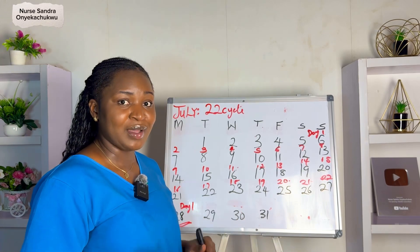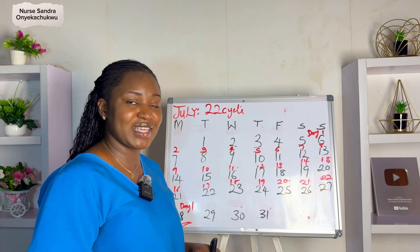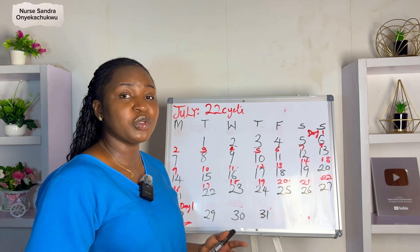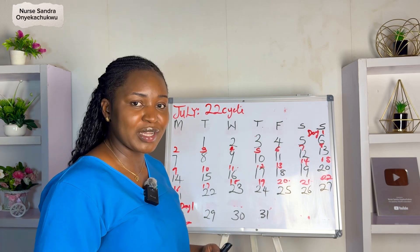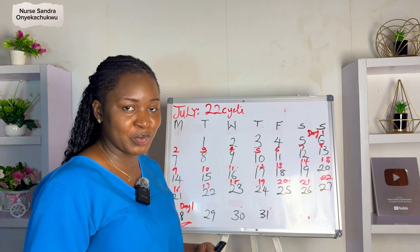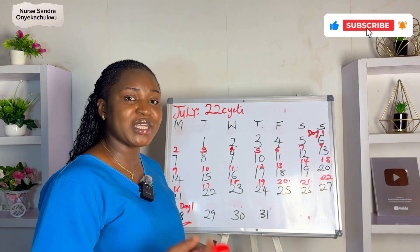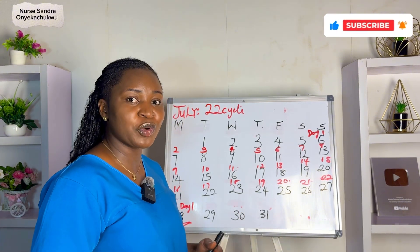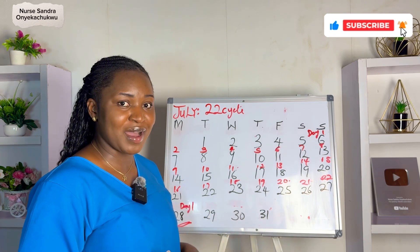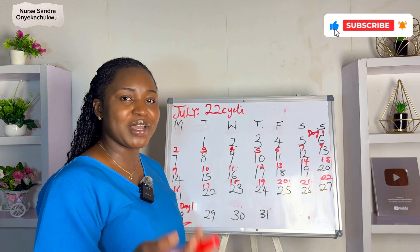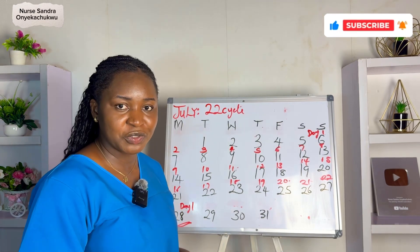What if your cycle is irregular? Some women don't have the same cycle length every month — it may vary from 25, 28, 31, to 35. You won't get accurate results with this method in that case. If you want a detailed video on how to calculate your cycle with an irregular cycle, let me know in the comments. If you're finding this video helpful, don't forget to like, subscribe, and share. Remember: your health is your wealth, and little changes make a big difference.